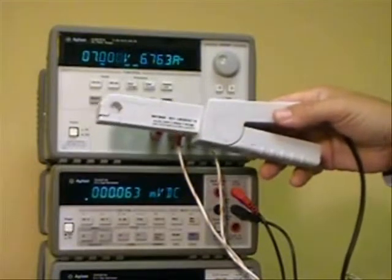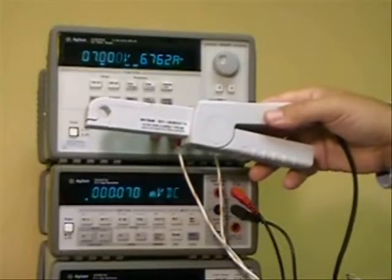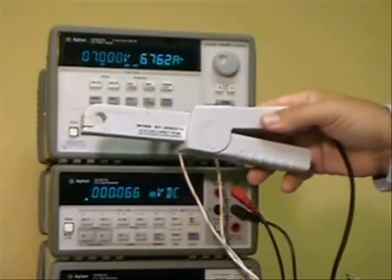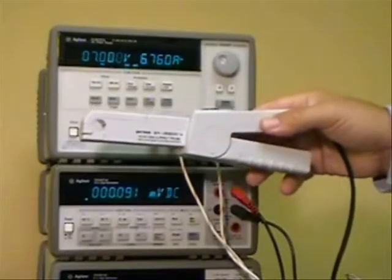Today we're going to talk about the Agilent 34134A AC and DC current probe. This current probe extends the range of our DMMs to upwards of 50 amps.